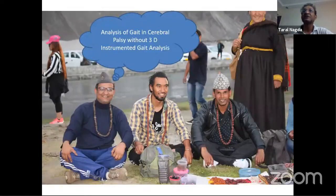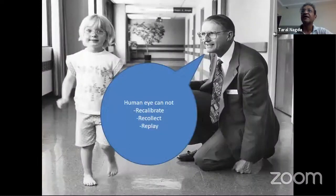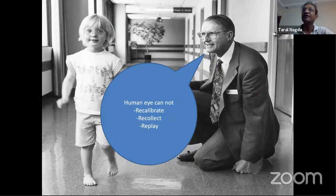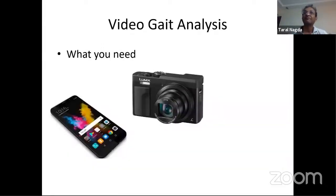Very few of us are lucky enough to have a 3D instrumented gait analysis lab. Does that mean people without a gait analysis lab cannot do gait analysis? That's not correct. Jim Gage said the human eye cannot recalibrate, recollect, and replay — that's why we need a lab. But you can recalibrate, recollect, and replay even without a lab. All you need is something to capture video — a digital camera, or now simply a smartphone. With a smartphone and a stand, you have your own visual gait analysis lab.